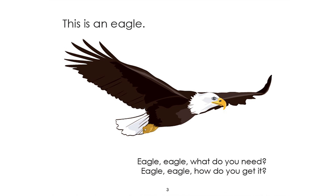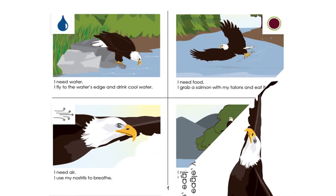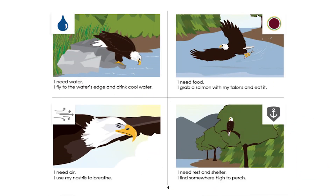Turn the page down. If you look at this page there are a few things I want you to look at. In the upper left hand corner we see a drop of water — that icon means water, something the eagle needs to live and grow. In the upper right corner, the colored circle means food or energy, something the eagle also needs. In the lower left hand corner, a bunch of arrows represents air.